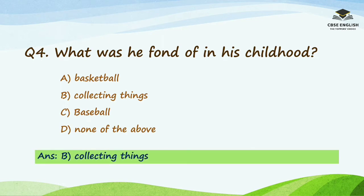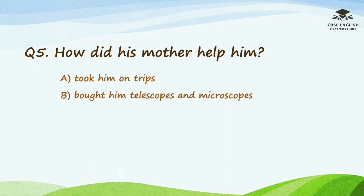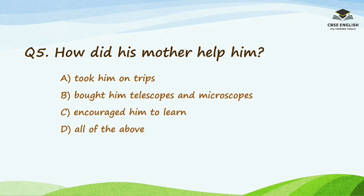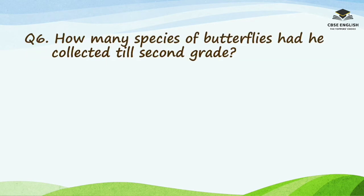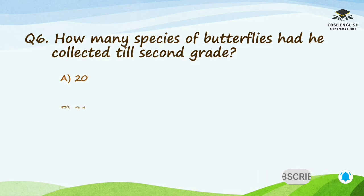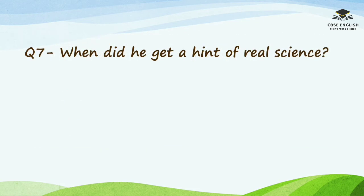Question number four: what was he fond of in his childhood? Options are basketball, collecting things, baseball, or none of the above. The right answer is collecting things. Question number five: how did his mother help him? Options are took him on trips, bought him telescopes and microscopes, encouraged him to learn, or all of the above. The right answer is all of the above. Question number six: how many species of butterflies had he collected till second grade? Options are 20, 21, 24, or 25. The right answer is 25.